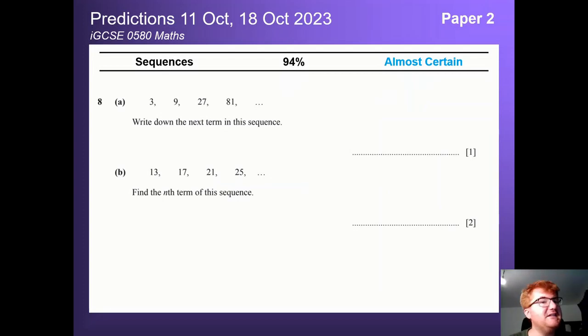On to our next one which is sequences, comes up a lot on Paper 2 compared to Paper 4 at 94%, and they're generally quite standard questions. Find the next term in the sequence, find the nth term of the sequence. You do have to be familiar with working with geometric sequences as well, so just be careful. They can be a bit more complicated or even quadratics as well. But at 94% you should be revising this for Paper 2.